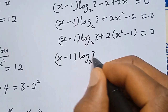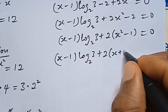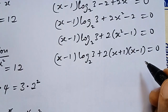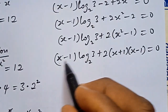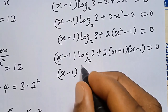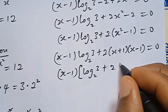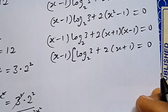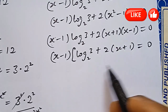The expression X squared minus 1 is a difference of two squares, so it becomes X plus 1 times X minus 1. We now have X minus 1 times log base 2 of 3, plus 2 times X plus 1 times X minus 1, all equals 0. Factoring out X minus 1 gives: X minus 1 times the bracket log base 2 of 3 plus 2 times X plus 1, equals 0.